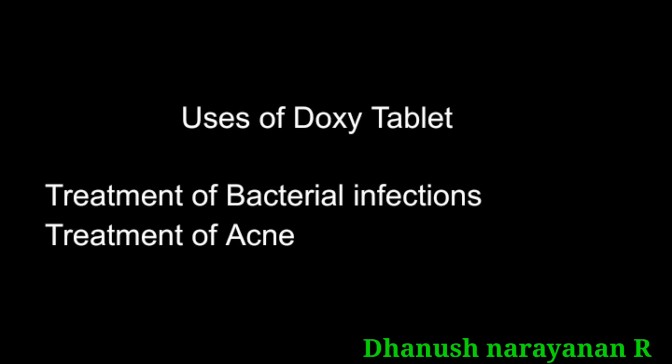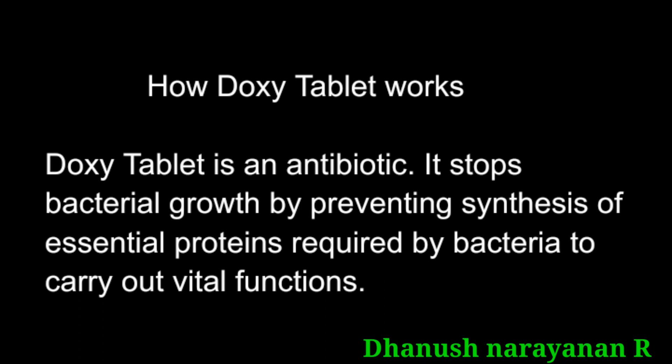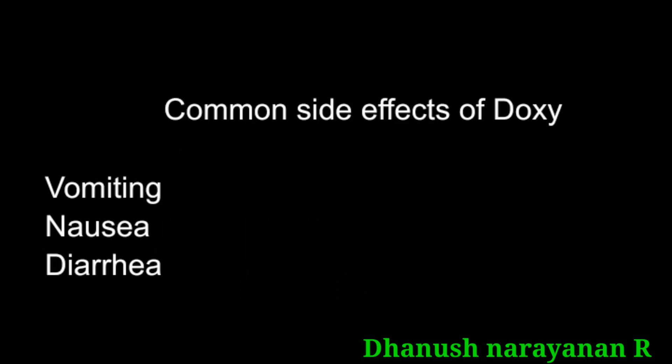Let's see about the mechanism of action of doxycycline, or how doxycycline works. Doxycycline is an antibiotic drug. It stops bacterial functions by preventing the synthesis of essential proteins that are required for bacterial growth and also required to carry out vital functions of bacteria.